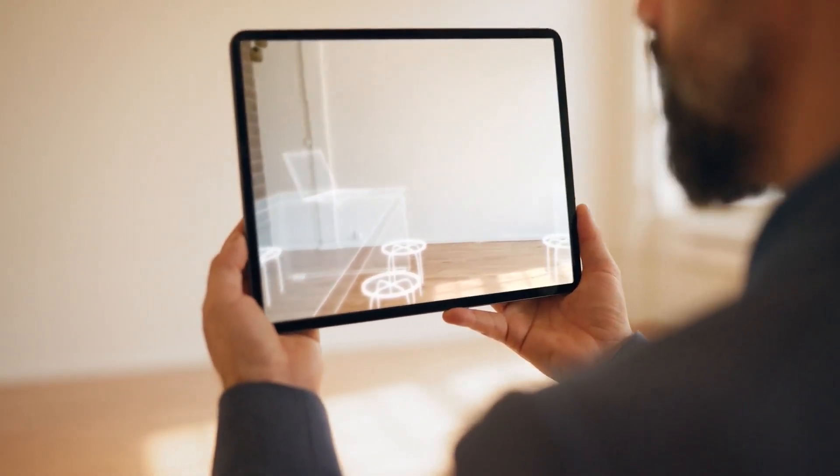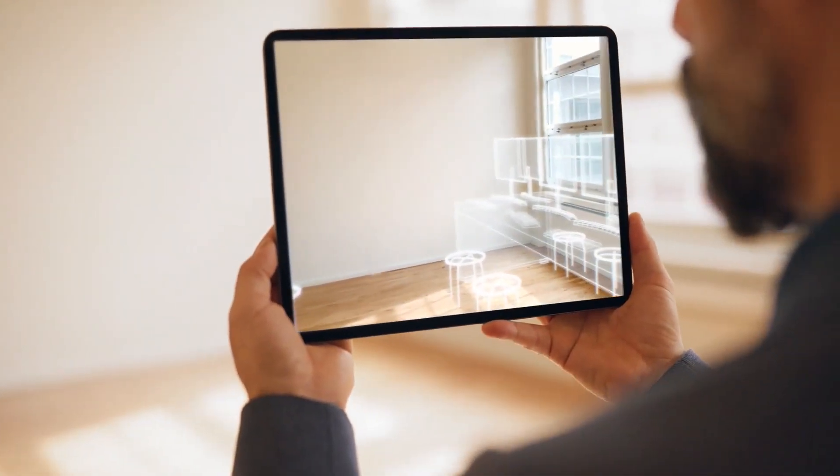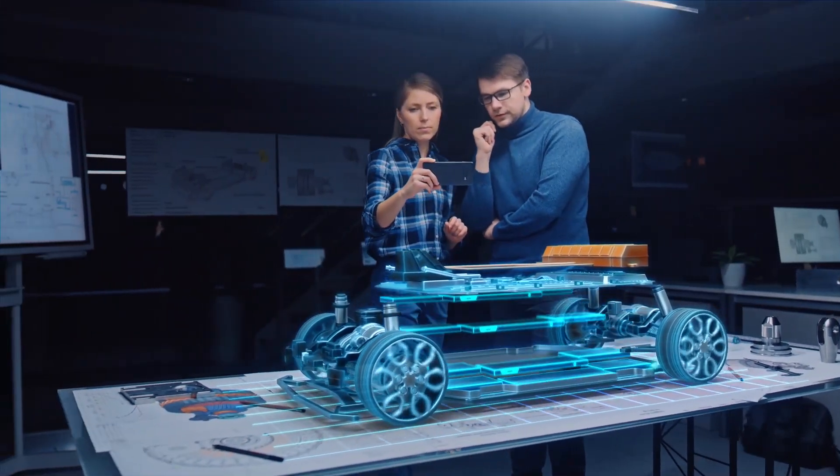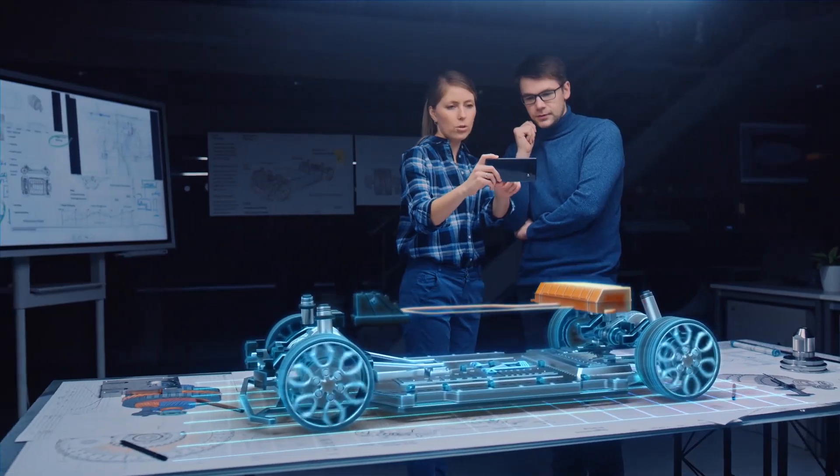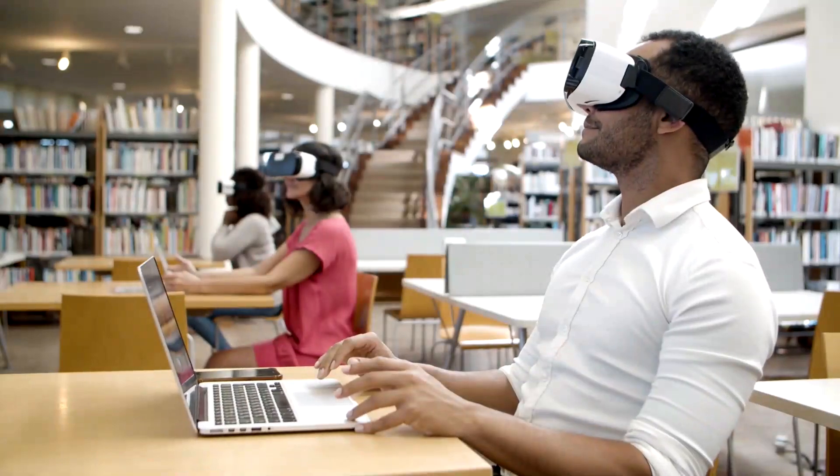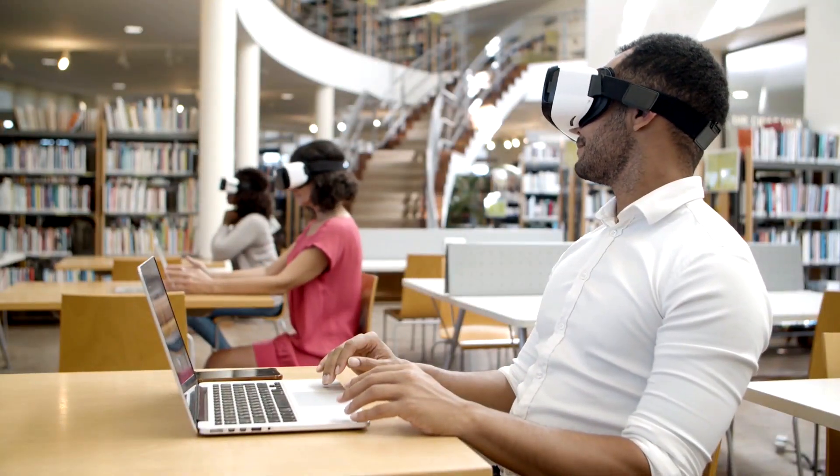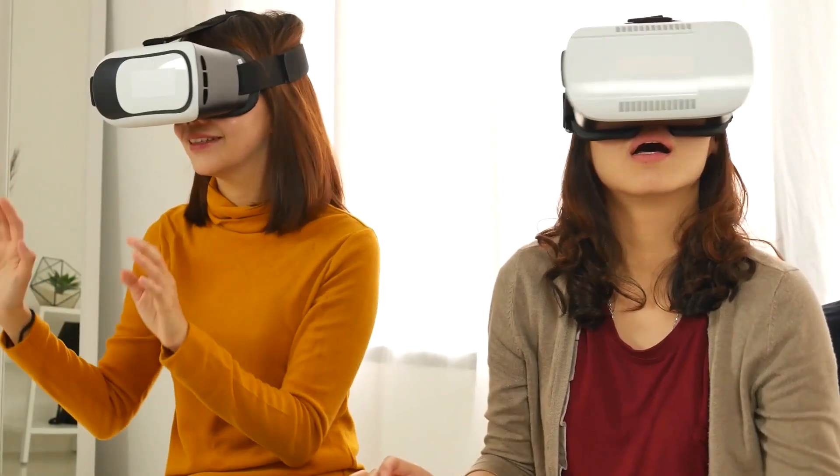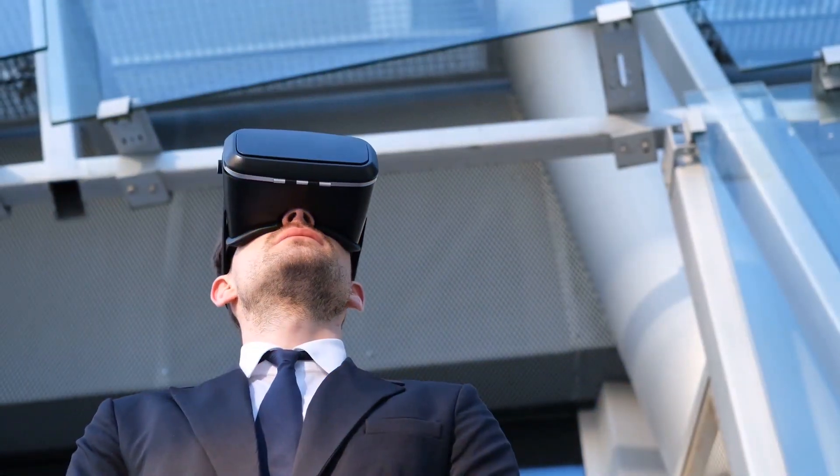Instead of transporting you to a virtual world, it takes digital images and layers them on the real world around you through the use of either a clear visor or a smartphone. Virtual Reality immerses you in a virtual world through the use of a headset with some type of screen displaying a virtual environment. These headsets also use a technology called head tracking, which allows you to look around the environment by physically moving your head.